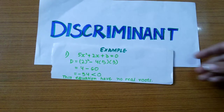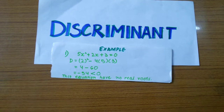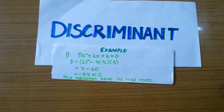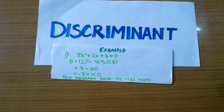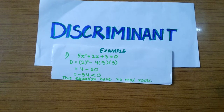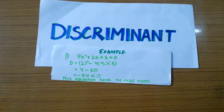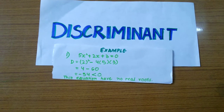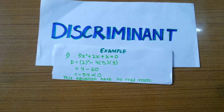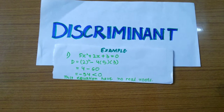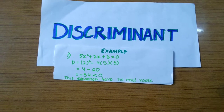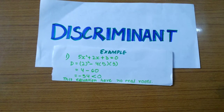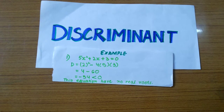There are some examples. First: 5x squared plus 2x plus 3 equals zero. When we put the values into D equals b squared minus 4ac, we get minus 54, which is less than zero. Thus this equation has no real roots.